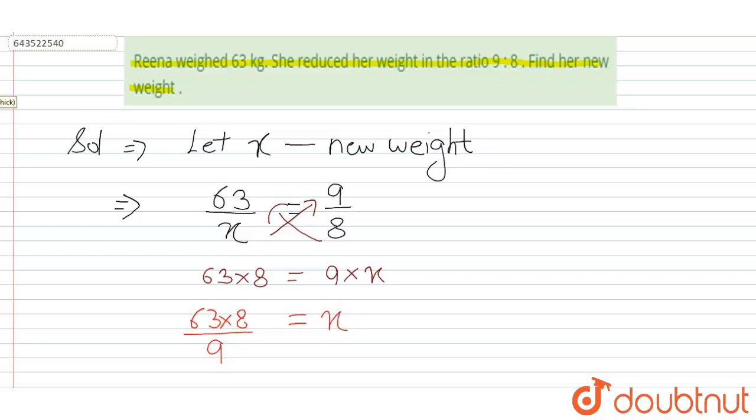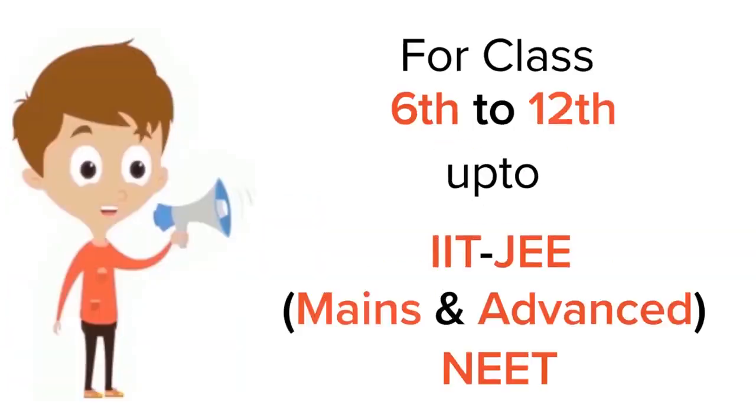7 into 8 will be equal to 56. Hence this is the answer, 56 kg. Thank you.